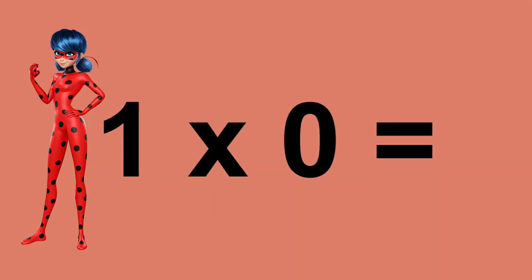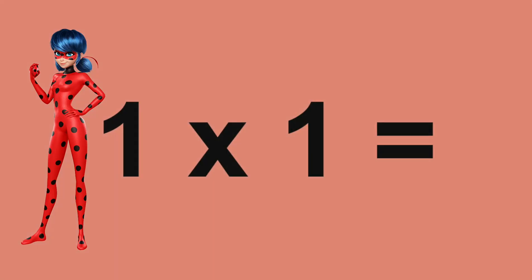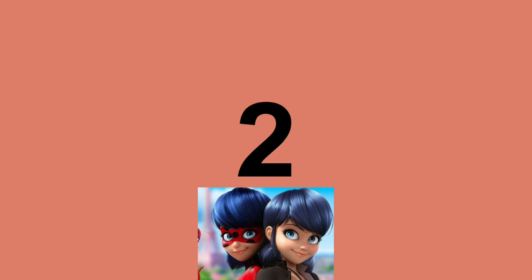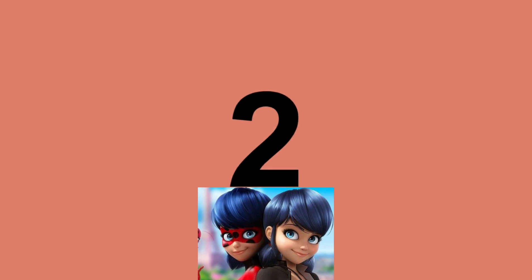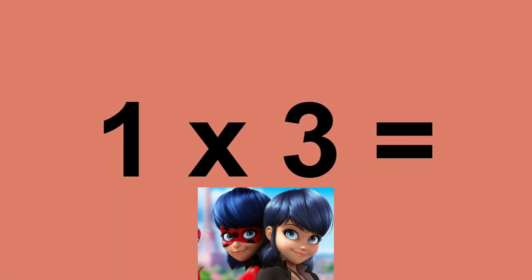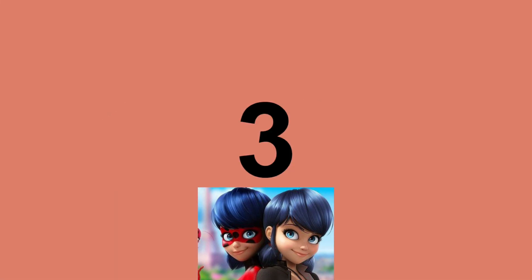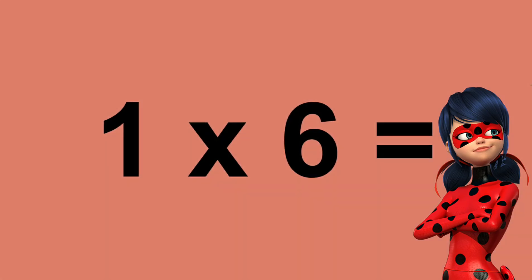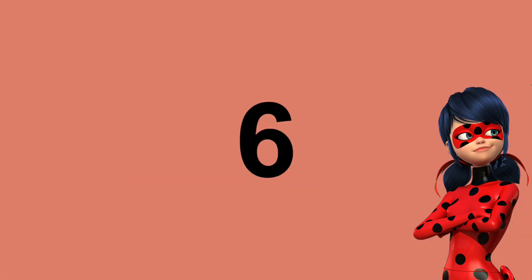One times zero equals zero. One times one equals one. One times two equals two. One times three equals three. One times four equals four. One times five equals five. One times six equals six.